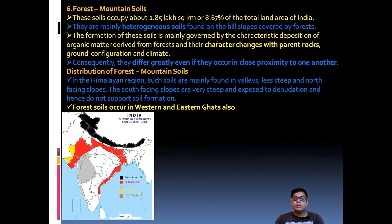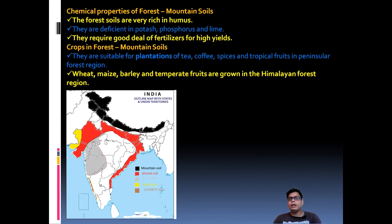Distribution of forest and mountain soil: in the Himalayan region, these soils are found in Uttarakhand, Jammu & Kashmir, Arunachal Pradesh, and Sikkim. Forests are also found on the western and eastern sides of India. Chemical properties: the soil is rich in humus because vegetation is very high in these areas, but deficient in potash, phosphorus, and lime. Fertilizers are required for high production.